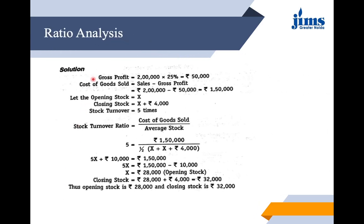Gross profit is 25% of ₹2 lakh = ₹50,000. Cost of goods sold = Sales − Gross Profit = ₹2,00,000 − ₹50,000 = ₹1,50,000. Stock turnover ratio = Cost of Goods Sold / Average Stock. Putting in values: 5 = 1,50,000 / ((x + x + 4,000) / 2). Solving the equation gives x = ₹28,000 as opening stock, and closing stock = ₹32,000. It seems difficult but with practice is straightforward.